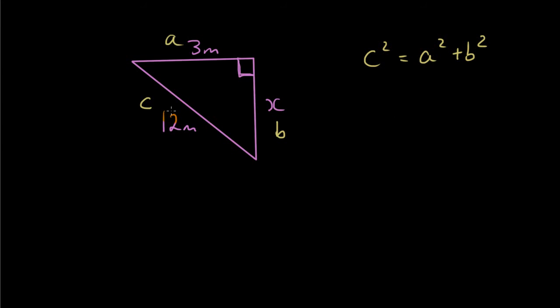So you have c squared equals a squared plus b squared. Now you substitute the numbers in. So c is twelve, a is three, and b is x.